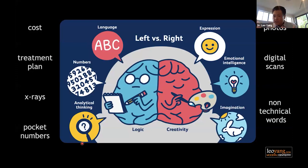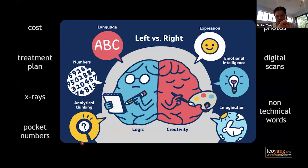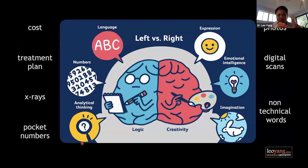The key is that when you have these conversations with patients, use non-technical words. On the left side of the brain in dentistry, you're talking about cost of treatment, treatment plan details with all these codes, the technical side, and periodontal pocket numbers. These are technical things that, although obvious to us, are not so obvious to the patient. A lot of times it makes sense to us, but patients don't follow.